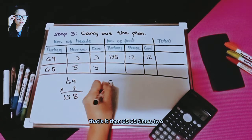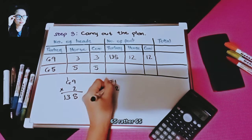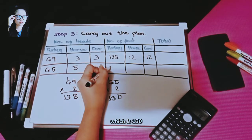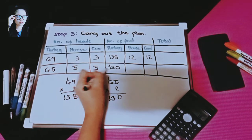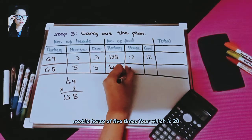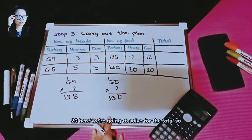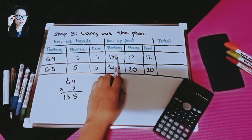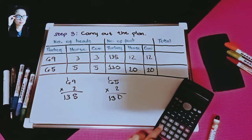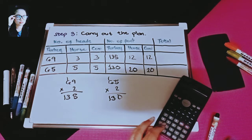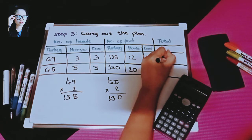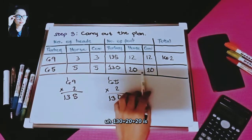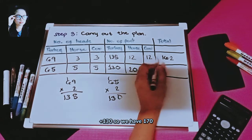For 65 turkeys: 65 times 2 equals 130; 5 times 4 equals 20 for horses and 20 for cows. Total: 130 plus 20 plus 20 equals 170. Notice the total feet is still far from 230.